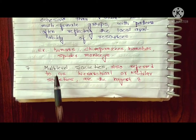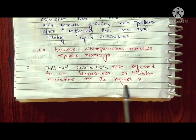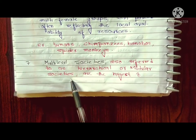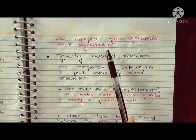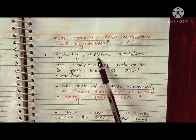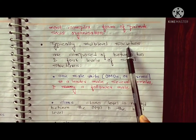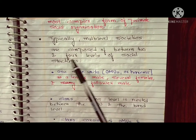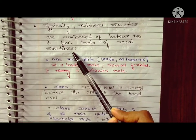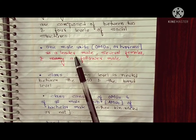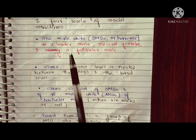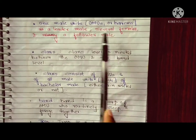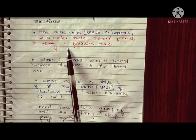The next is multi-level society. This is a hierarchical and modular society, and it is the largest and most complex form of primate social organization. It consists of two to four levels of social structure. The first and smallest level is the one-male unit, also called a harem, consisting of a leader male, several females, and follower males.